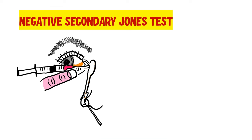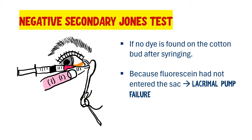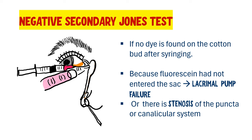A negative secondary Jones test means no dye is found on the cotton bud even after syringing. This indicates that although the obstruction may have been relieved, there is no dye present inside the lacrimal sac to reach the bud. This suggests either a lacrimal pump failure — meaning fluorescein never entered the sac — or stenosis of the puncta and proximal canalicular system preventing the dye from reaching the sac in the first place.